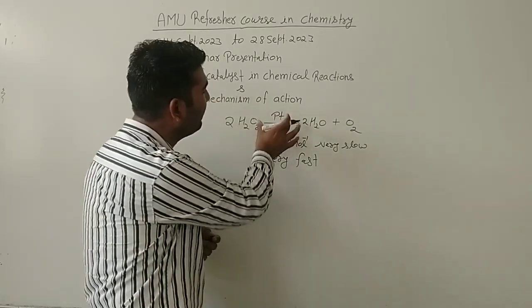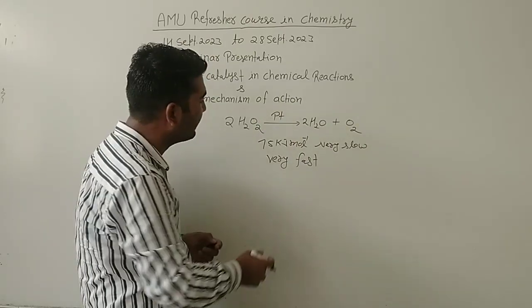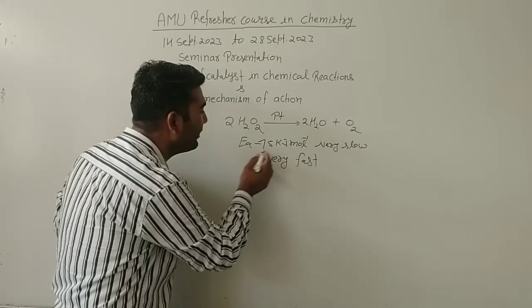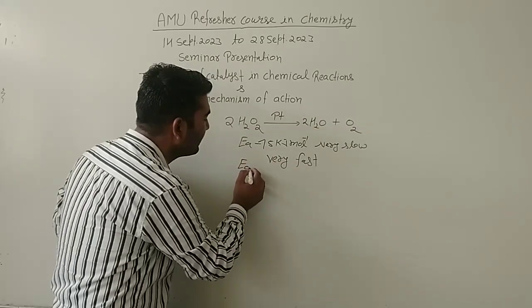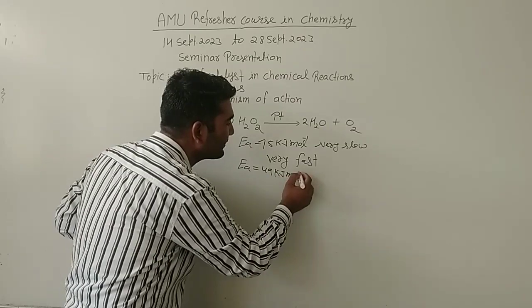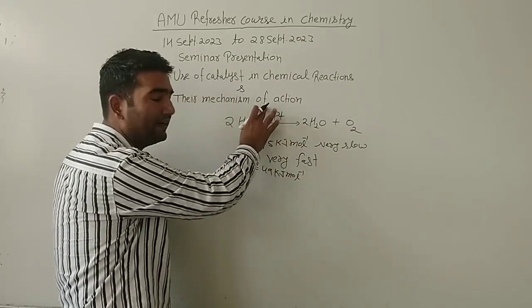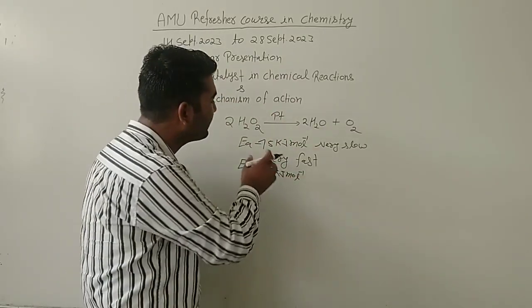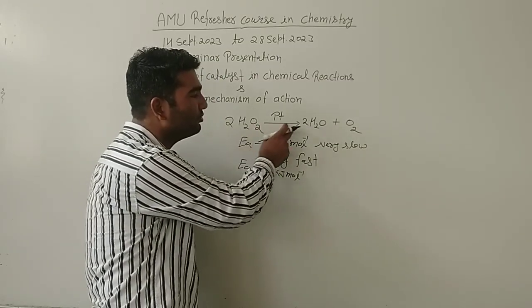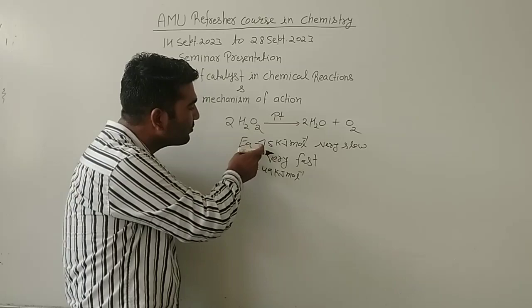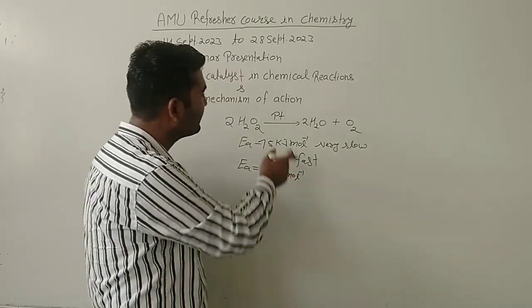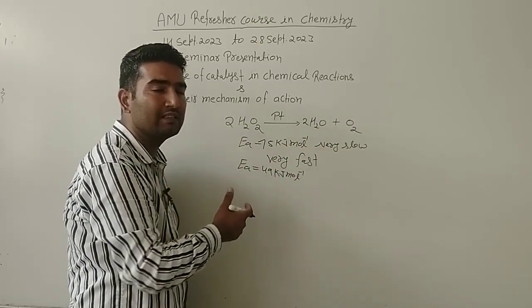And what platinum does in this reaction? It decreases the energy of activation from 75 kilojoule to 49 kilojoule per mole. This platinum metal is decreasing the activation energy for decomposition of hydrogen peroxide from 75 kilojoule to 49 kilojoule per mole. Hence, platinum is a catalyst for this reaction.